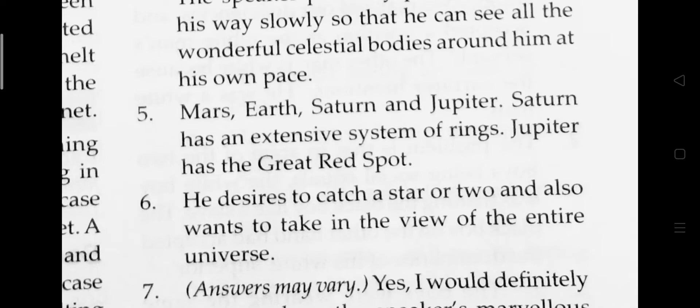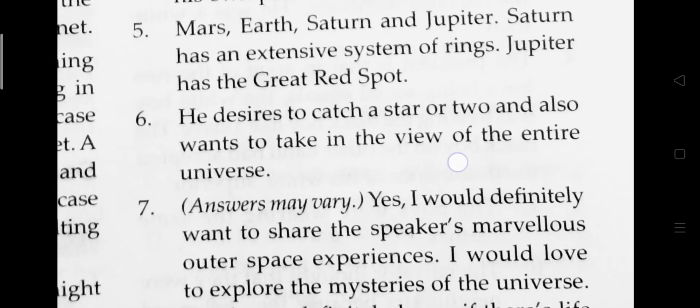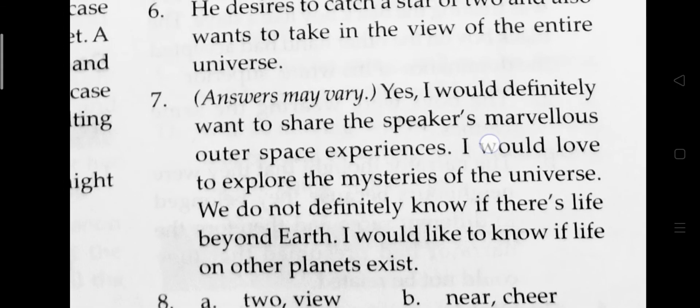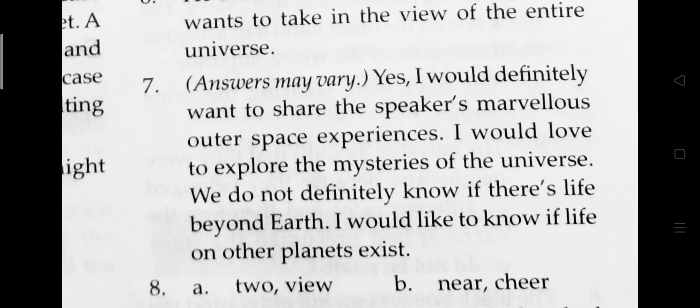Answer number five: Mars, Earth, Saturn, and Jupiter. Saturn has an extensive system of rings; Jupiter has a great red spot. Answer number six: he desires to catch a star or two, and also wants to take in the view of the entire universe.